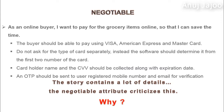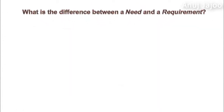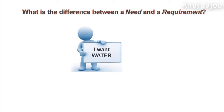The Negotiable attribute criticizes this level of detail. Whereas a programmer would welcome a story with every detail, why is it not encouraged when the story is being created? To understand this, tell me: what is the difference between a need and a requirement? If I say I want water, is it a need or a requirement?